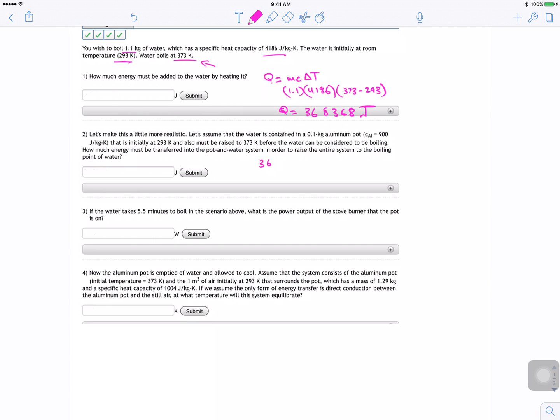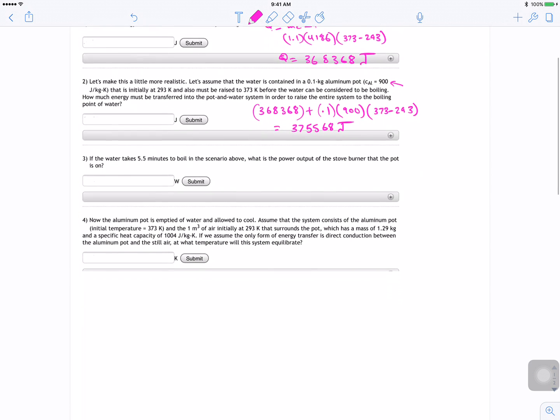So we know how much energy we need to get the water to boiling point, 368,000. We just add 0.1 kilograms and the 900 from the heat capacity, and then the energy to the temperature 373 minus 293. Okay, when you add these guys together you get 375,568 joules. Cool.